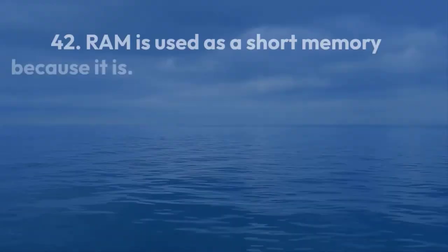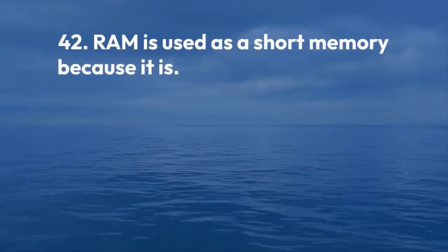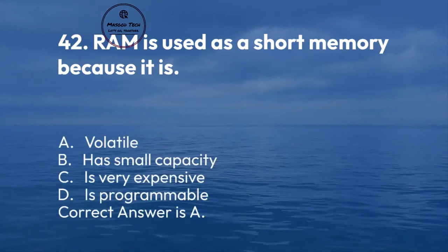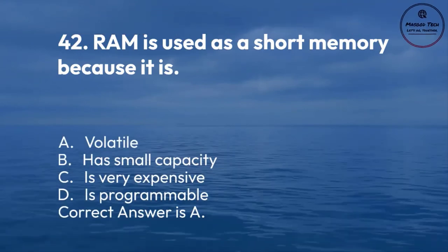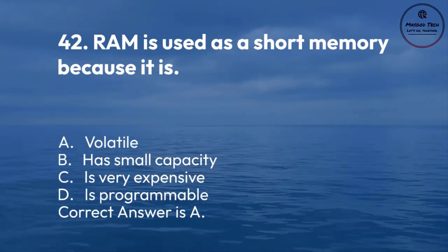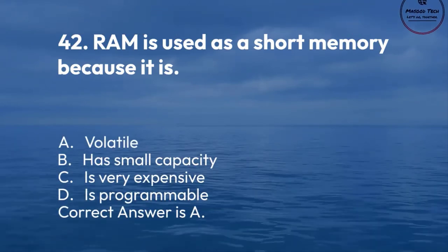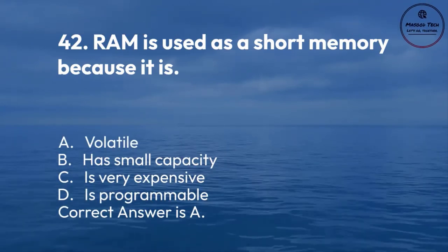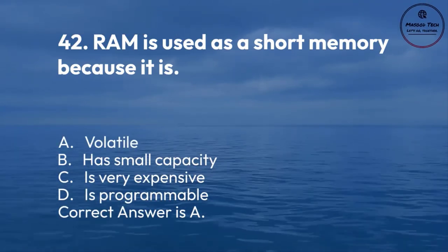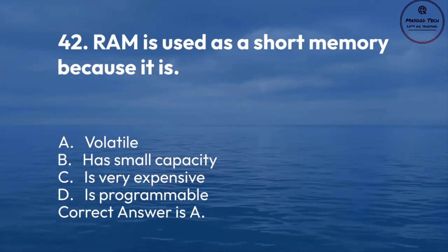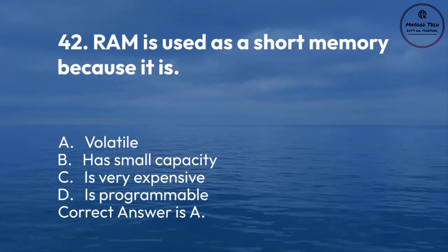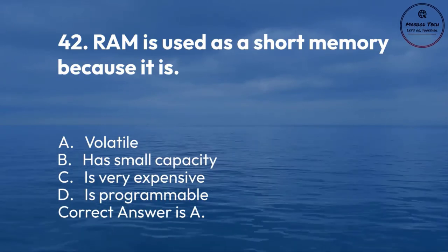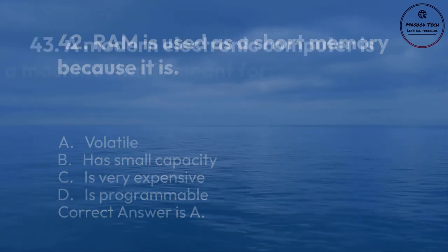Number 42. RAM is used as a short memory because it is: A. Volatile. B. Has small capacity. C. Is very expensive. D. Is programmable. Correct answer is A.